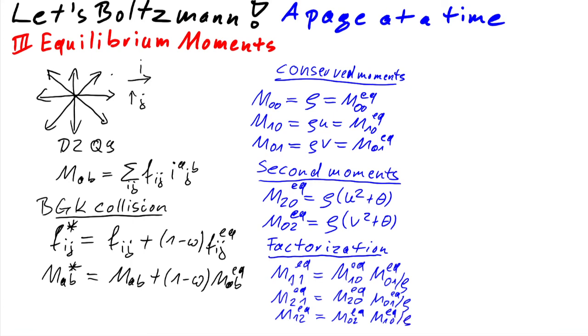And there would be the last one, M_2,2 equilibrium would be M_2,0 equilibrium times M_0,2 equilibrium divided by rho.